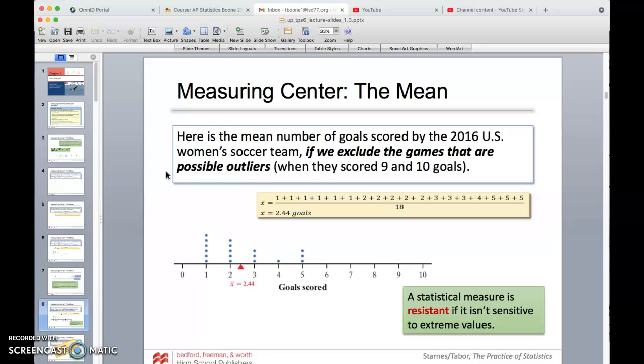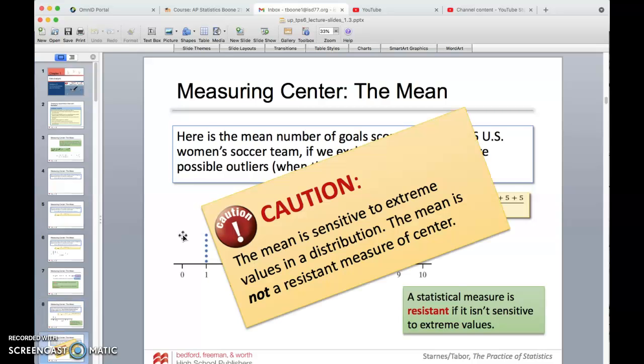Now, a statistical measure is resistant if it isn't sensitive to extreme values. 9 and 10 were kind of extreme values on that. So if we remove those, look what happens to the mean. The mean drops if we take those two situations out. The mean now drops to 2.44. You can see that the mean is not resistant to those extreme values. Those extreme values, 9 and 10, will pull that mean towards it and make it seem maybe artificially high, and that's kind of the danger of having outliers and maybe talking about maybe throwing them out in some of the data sets that we use. The mean is sensitive to extreme values, so it is not a resistant measure of center.